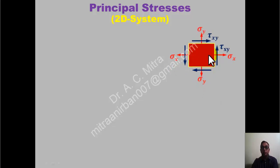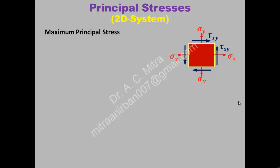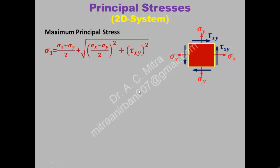You can understand from this two-dimensional element: normal stresses along x-axis and y-axis, which are called sigma x and sigma y, and some shear stresses applied along the plane tau xy. The sign convention of sigma x, sigma y, and tau xy is very important to solve the problem. The maximum principal stress is normally denoted by sigma 1, and that equals sigma x plus sigma y divided by 2, plus under root of (sigma x minus sigma y)/2 whole square plus tau xy square.